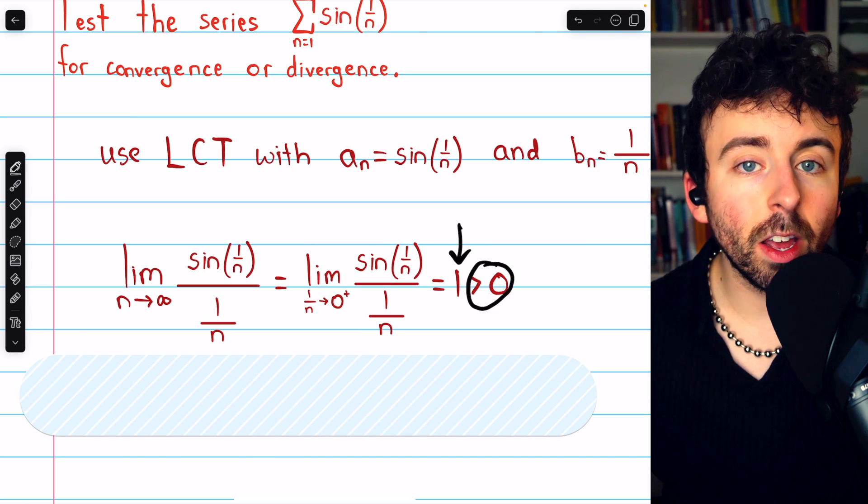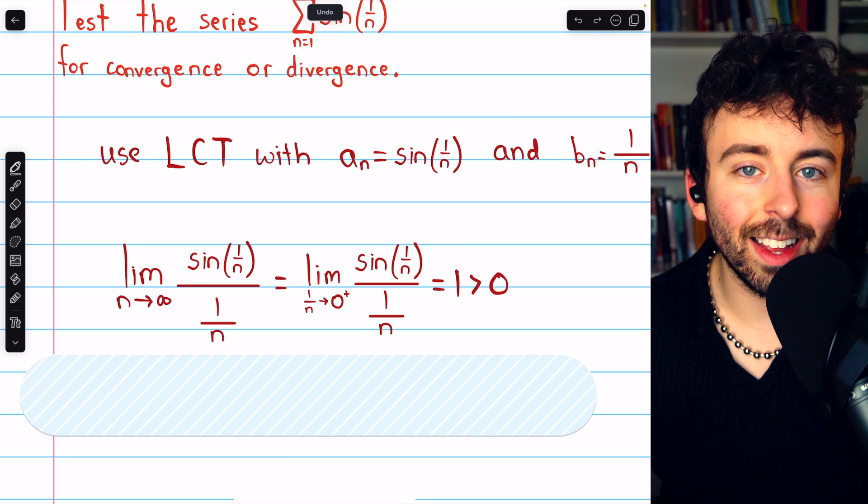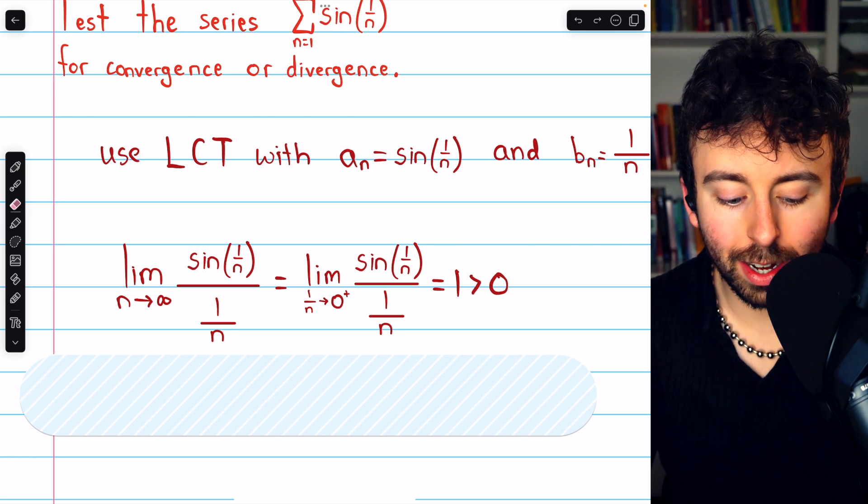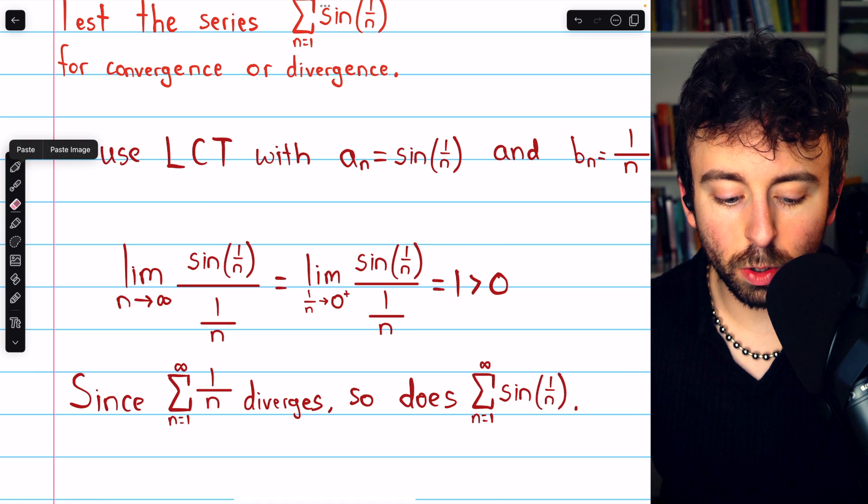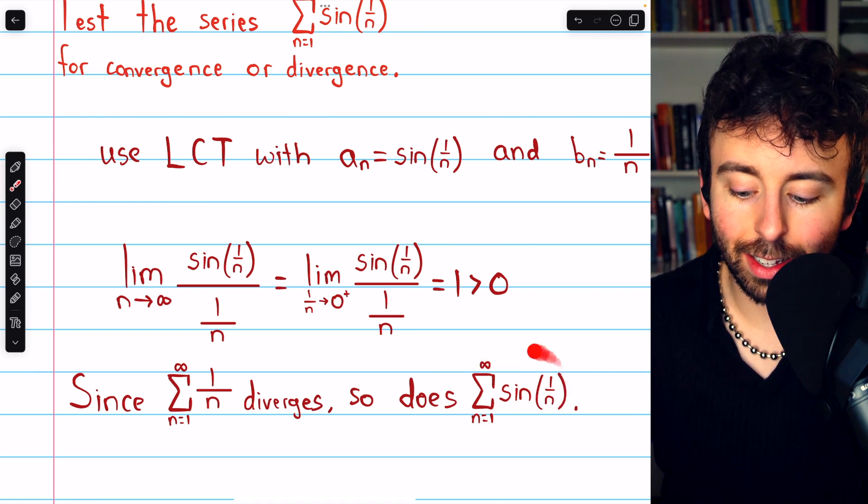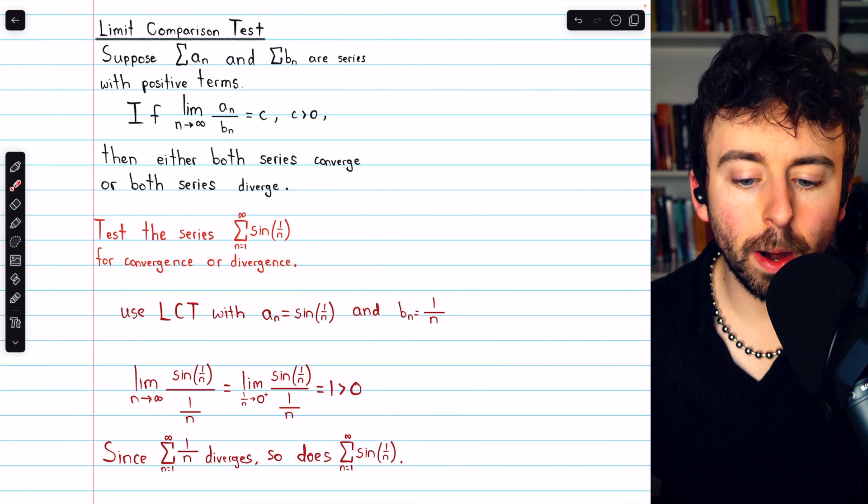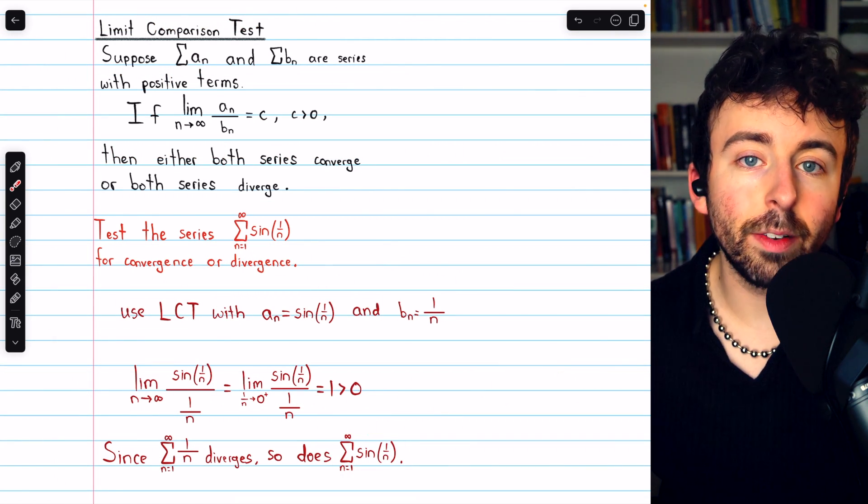And so the limit comparison test tells us that the two series must have the same behavior. Since the harmonic series diverges, so too does the series we were analyzing, the sum of the terms sine of 1 over n. And that's how to use the limit comparison test to show that this is a divergent series.